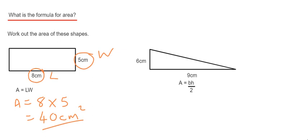Our base of our triangle is 9 and our height of our triangle is 2. So to work out the area we do 9 times 6 divided by 2.